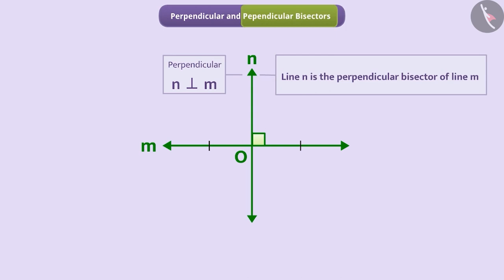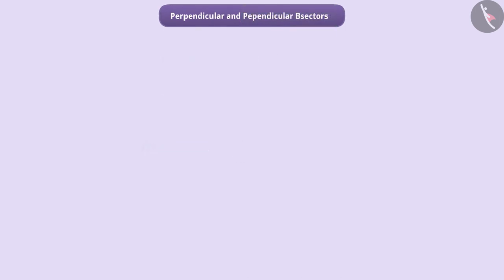For example, here we have a rectangular paper. Fold it down the middle lengthwise and make a crease. Let line AB be the crease of the paper. Fold the paper once again down the middle in the other direction and make a crease. Suppose we mark this crease PQ.